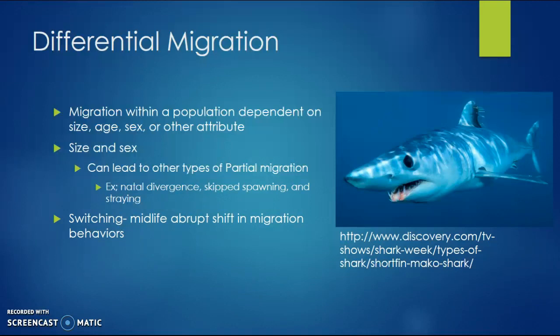Switching is an abrupt shift in migratory behavior that occurs within differential migration species. There is a mako shark in this image — think about reasons why they could be a differential migration species. Do you think it's size, age, sex, or another attribution? We'll learn about that later.